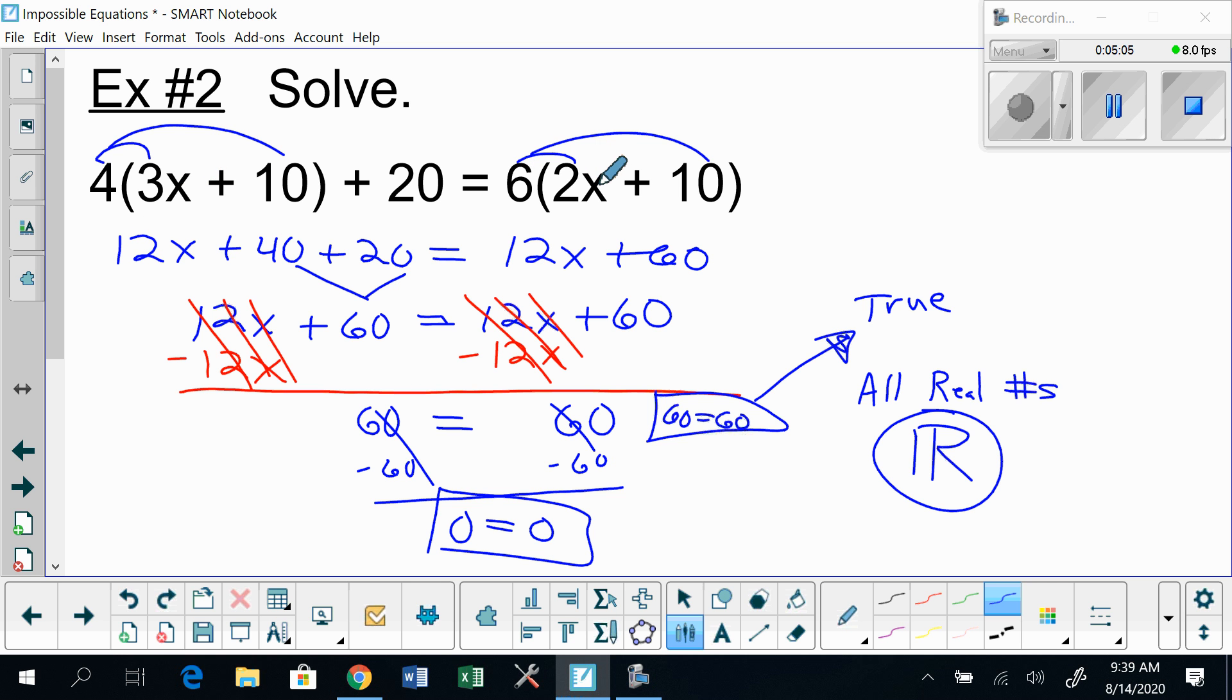These equations are actually impossible to get wrong. You can plug any number in the world in for x, and this equation would be true. If you don't believe me, try it. Try plugging like a 5 in for x here on both sides, and both sides would come out equal to each other. Try plugging in 600 in for x and it would work. You could plug in 5 billion in for x and this equation would work. Any number, any real number in the world, is going to make this equation true.